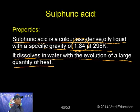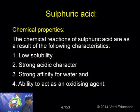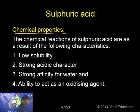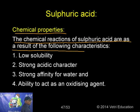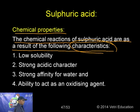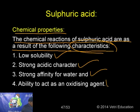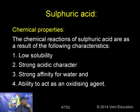Step three: absorption of SO₃ in dilute sulphuric acid to produce oleum H₂S₂O₇. Dilution of oleum with water gives sulphuric acid of desired concentration — up to 96–98%. By these three steps, sulphuric acid is manufactured by the contact process.